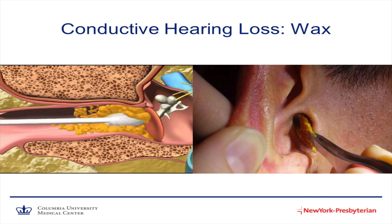Something we all have to deal with at one point or another is earwax. Earwax is just dry skin and skin oil mixed together, and sometimes when too much accumulates, or we push it all in with an evil q-tip, we can have hearing loss. If you ever have issues with wax, the safest ways to remove it is with earwax drops that they sell at any drugstore, or come and see us and we would be happy to take it out for you in a very safe way. We use a variety of tools, such as suctions and tiny little hooks. That sounds scary, but it's not.